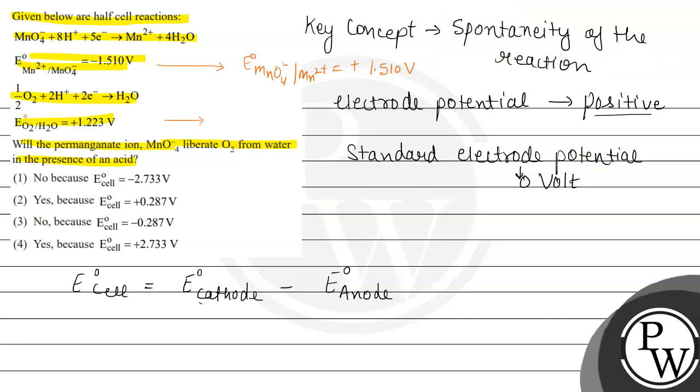And jo permanganate ion hai, wo oxygen liberate karenge from the water in the presence of the acid. So jo humara answer hoga, that will be option second. So option second. Yes, because E naught cell is equal to positive 0.287 volt. So let us mark option second as the final answer. And jo option first, third, and fourth hain, these are incorrect. Hope you understood it well. Best of luck.